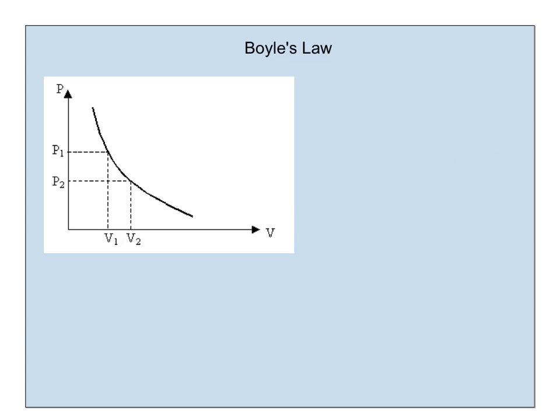First is Boyle's Law. This is the relationship between gas volume and pressure, and it is inverse. Generically, an inverse equation can be written y equals a constant value k over x. If I rearrange this for the constant value, and instead of x and y, use pressure and volume,